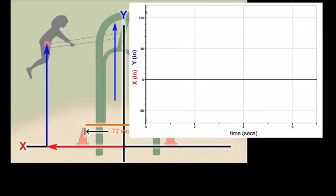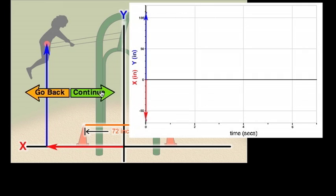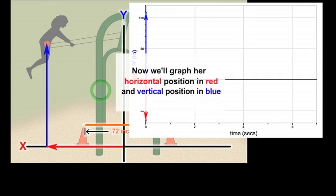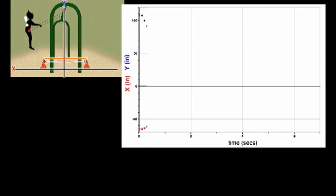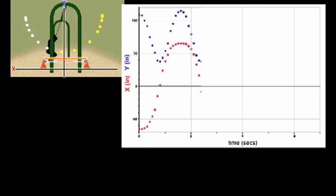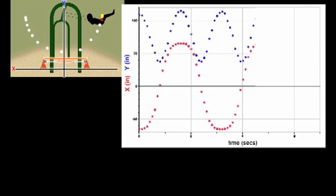In this system, we can see that when the swinger is to the left, her horizontal position is negative, and when she is to the right of the middle position, her horizontal position is positive. As we watch the animation, we can see the graphs of the swinger's horizontal and vertical position over time.